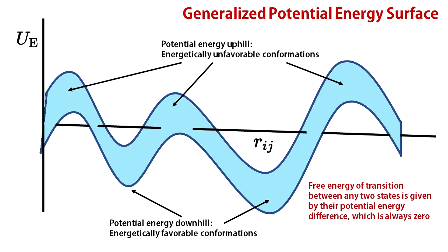Though a lot more complicated than the simple two-charge particle system, the basic concept of potential energy remains the same for proteins. Negative potential or potential energy downhills represent energetically favorable conformations, whereas positive potential or potential energy uphills represent energetically unfavorable conformations.